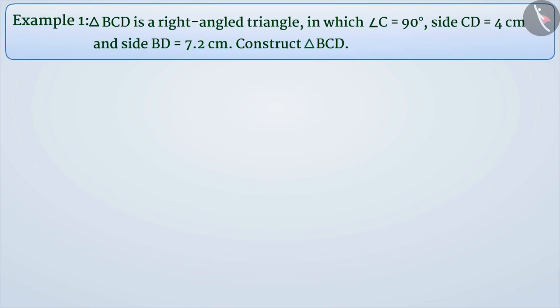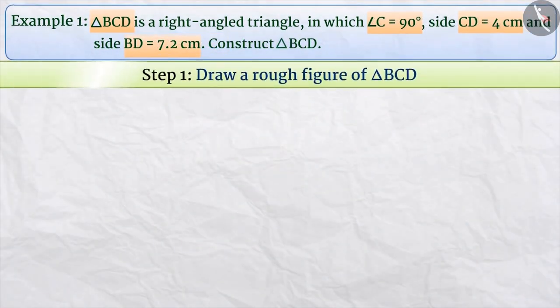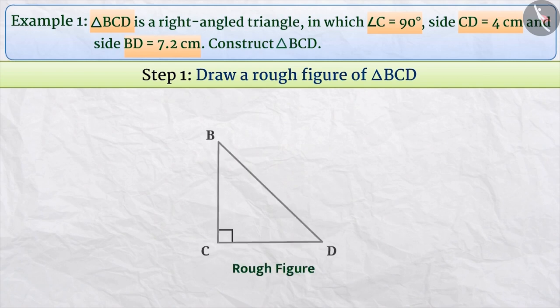Here we have to construct triangle BCD. In triangle BCD, the measure of angle C is 90 degrees, the length of side CD is 4 cm and the length of side BD is 7.2 cm. Step 1: First of all, with the given measurements of triangle BCD, we will draw a rough figure and mark the given measurements as well as the right angle.